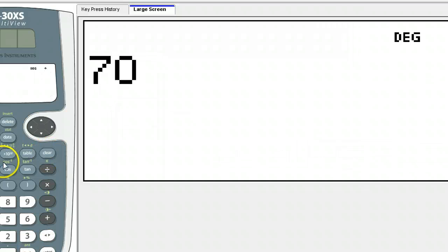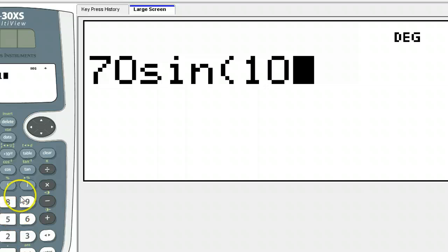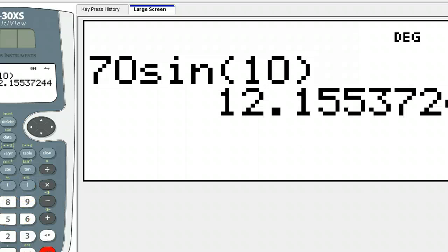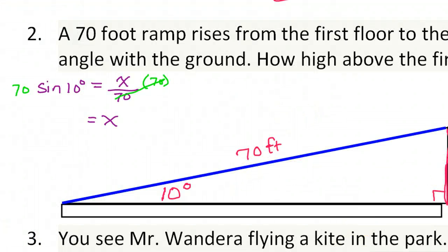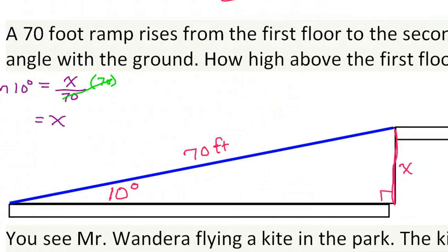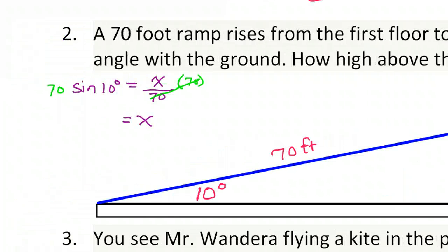70 sine 10 degrees. So 12.2 will round up, so 12.2. And we're talking about a distance, so this will be feet, 12.2 feet. That is the answer to number 2.